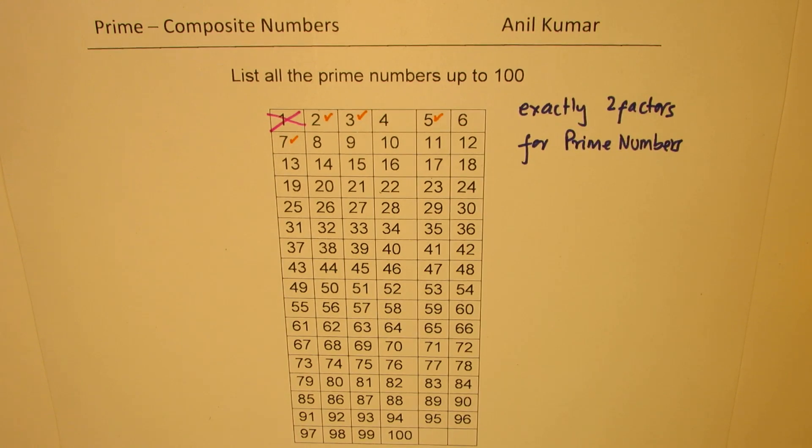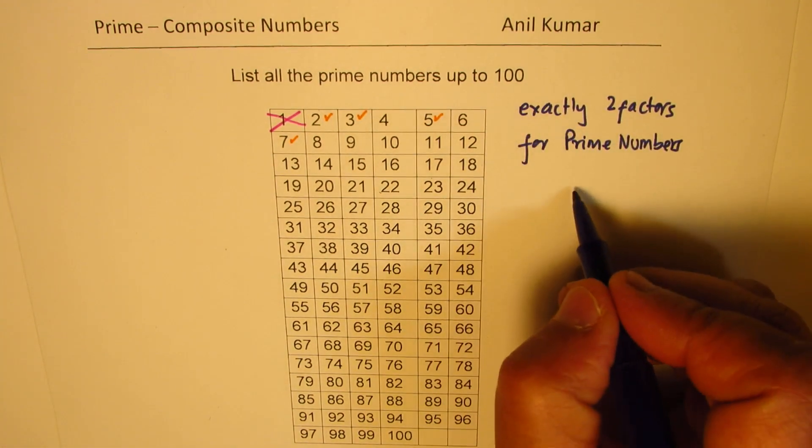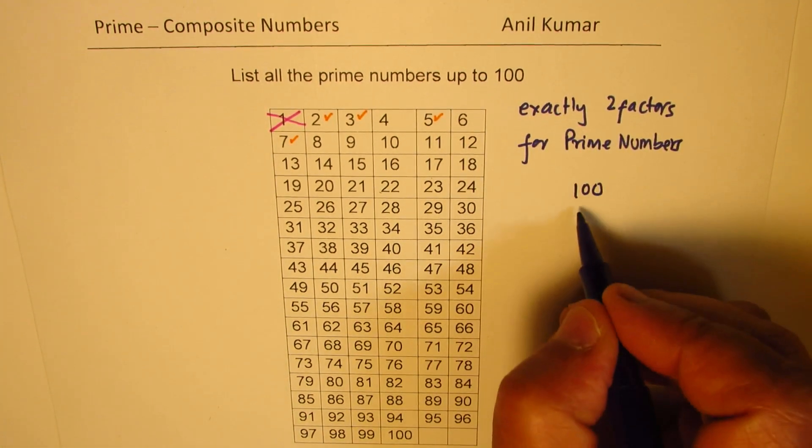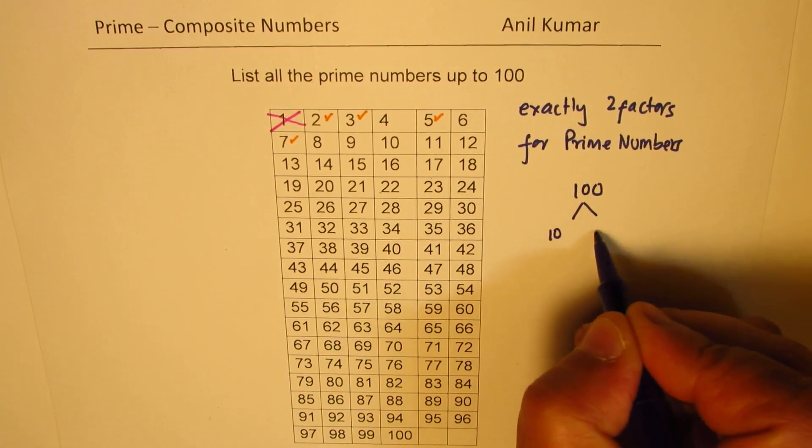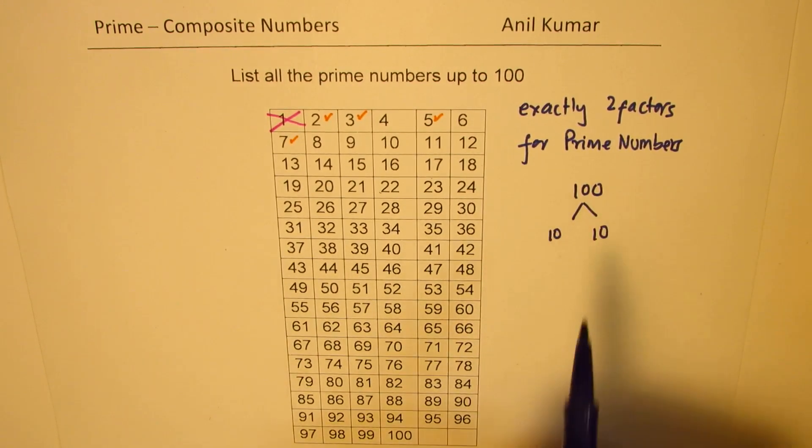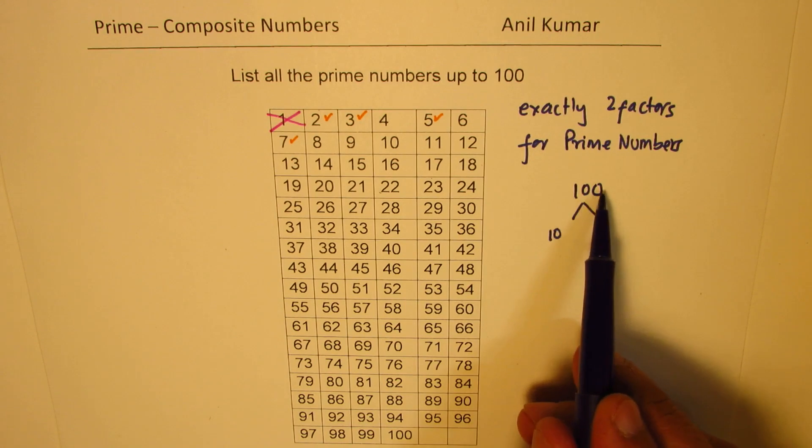See, the idea is, if I am looking for numbers like 100, 100 is like 10 times 10, okay?